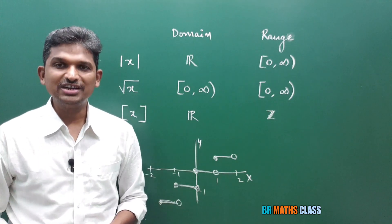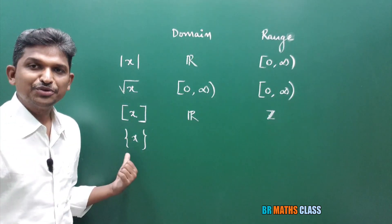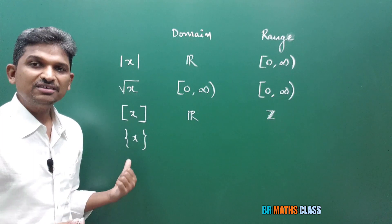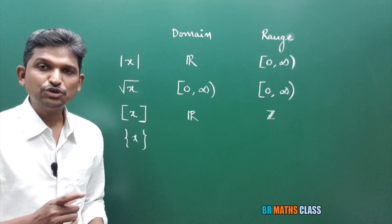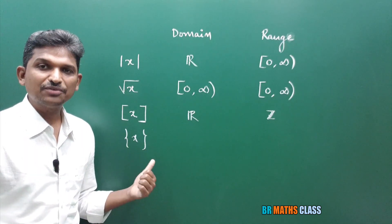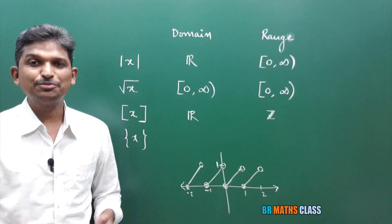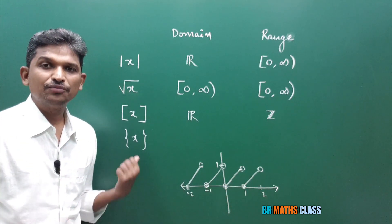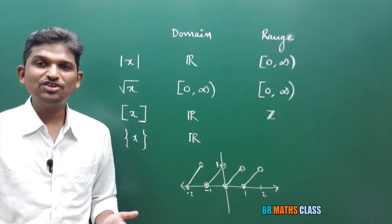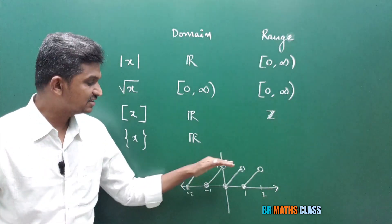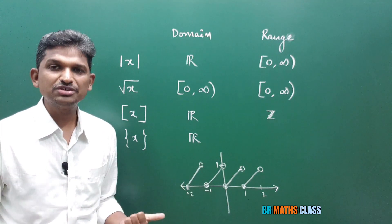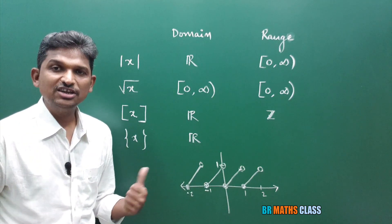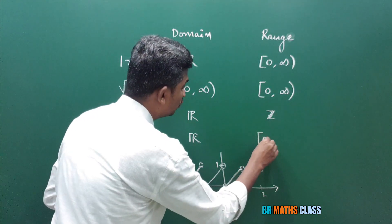Now, the fractional part function {x} = x − ⌊x⌋. The graph of the fractional part function is defined on all real numbers, so its domain is all real numbers. From the graph, this function is always between 0 and 1. The range of the fractional part function is [0, 1): 0 is included, but 1 is not included.